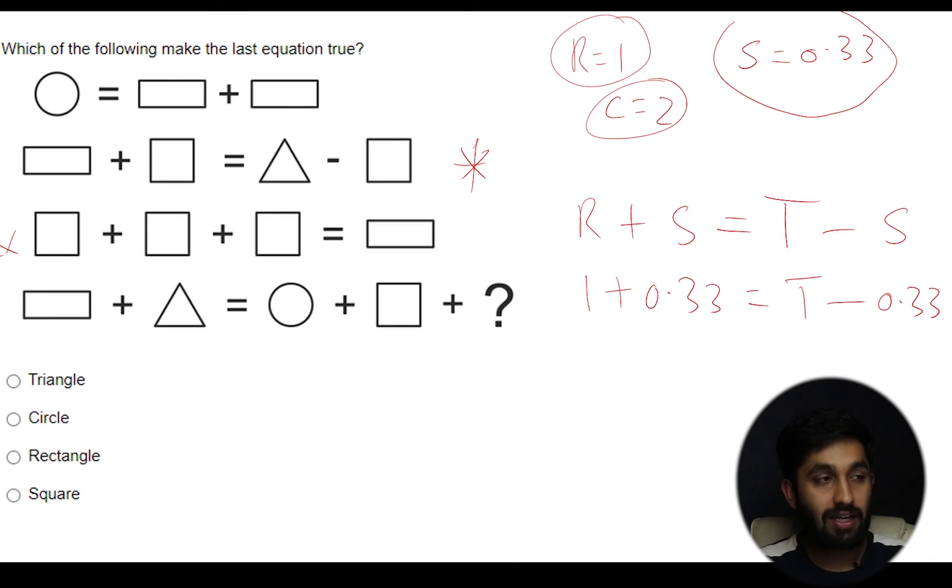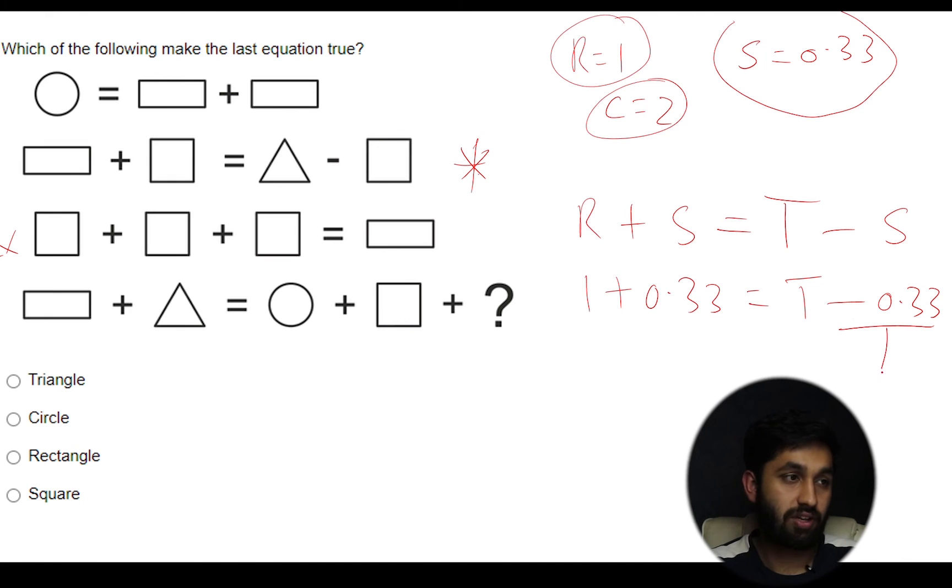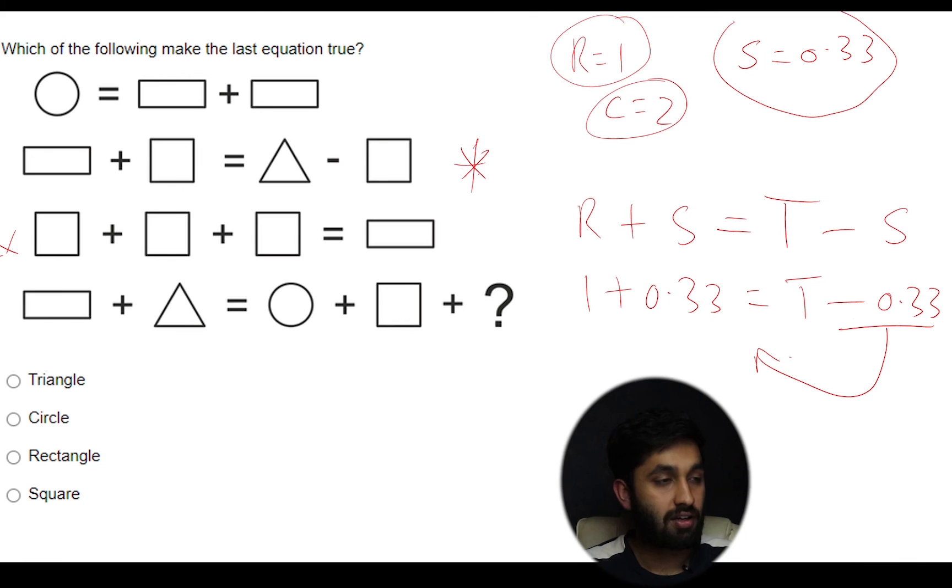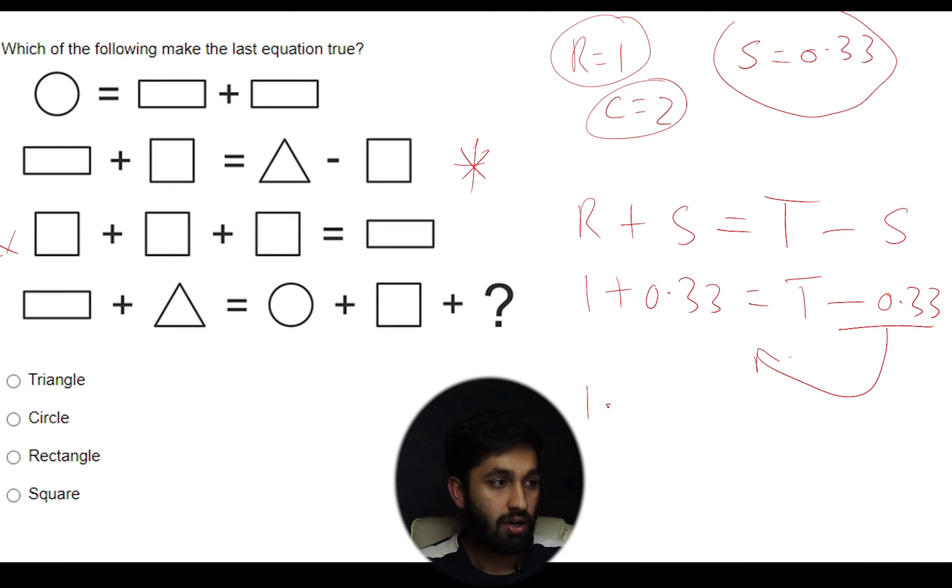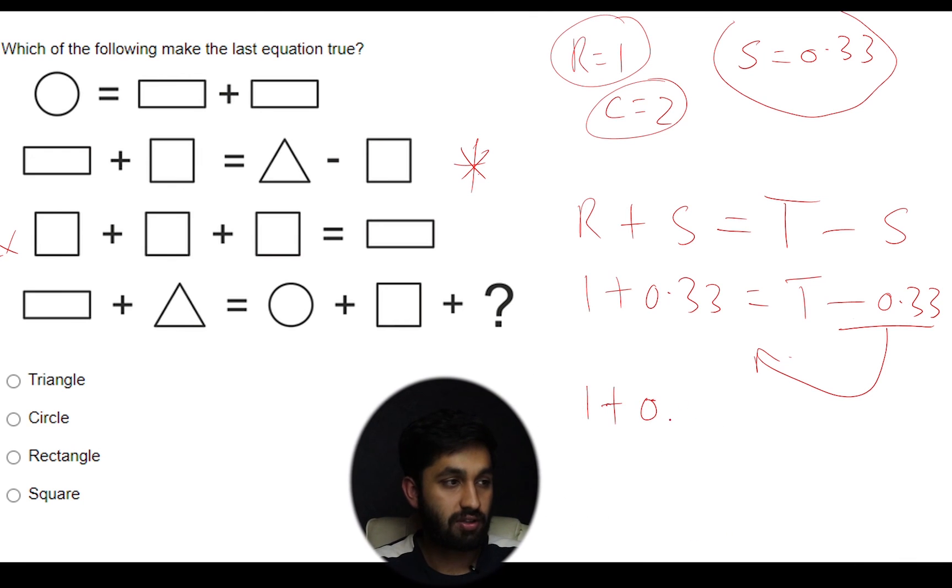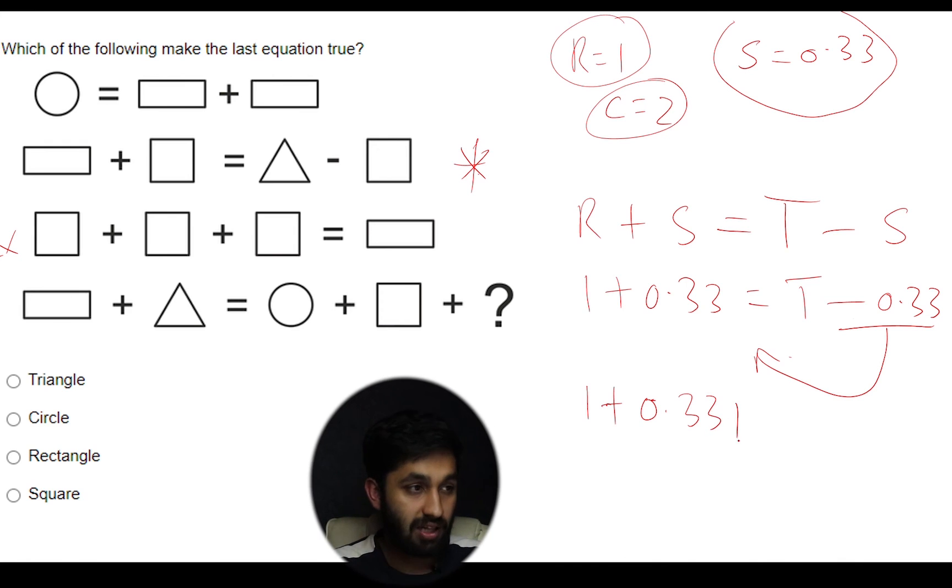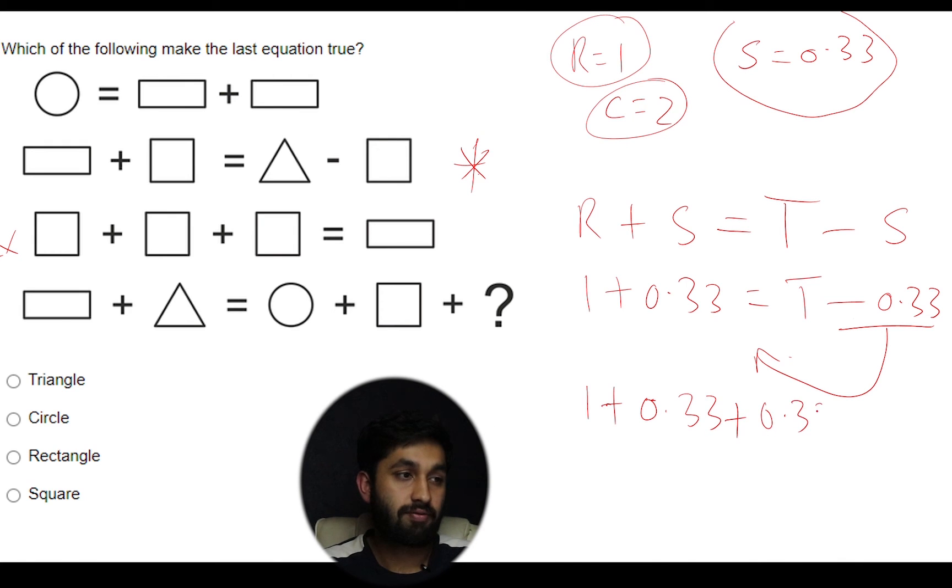Now let's rearrange this. We're going to take this 0.33 to the other side and it's going to add 0.33. So one plus 0.33 plus 0.33 equals triangle. So this should give us 1.66 which equals triangle.